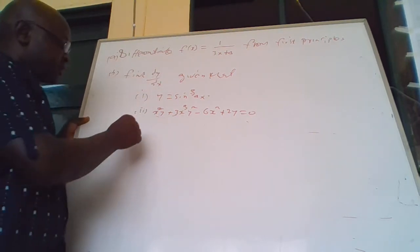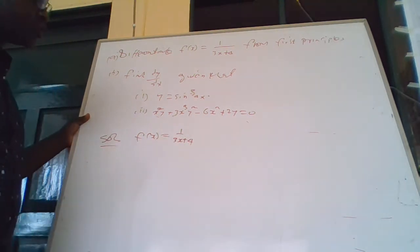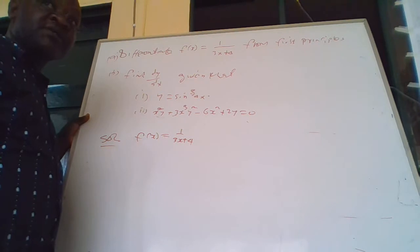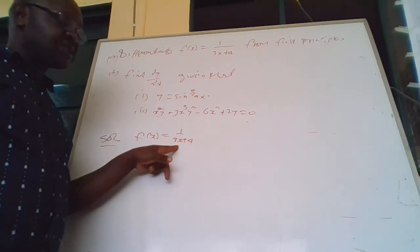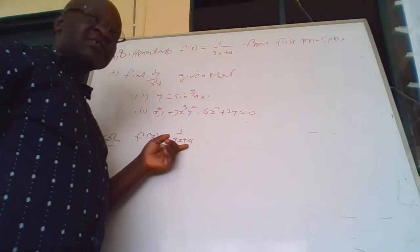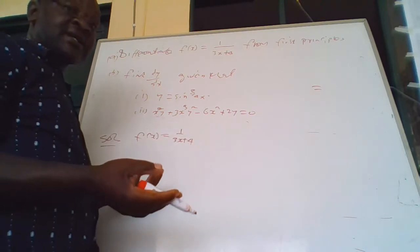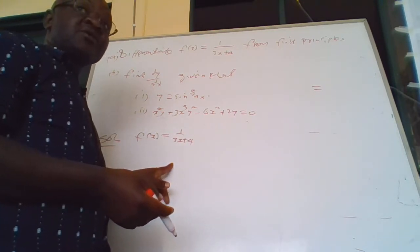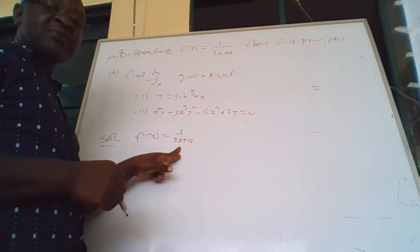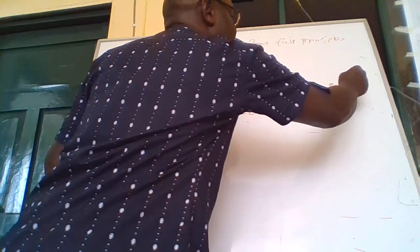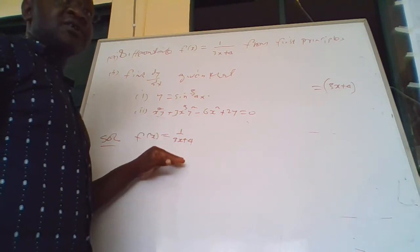So f of x equals 1 over 3x plus 4. They want us to differentiate this from first principle. But when you differentiate using the quotient rule, we shall be able to compare the result. When I differentiate using the quotient rule, we put down the bottom which is 3x plus 4, and differentiate the top with respect to x. The top here is 1, which is a constant, so we take 0.